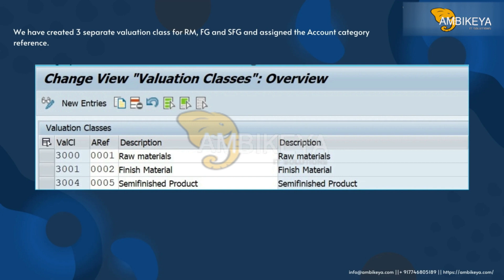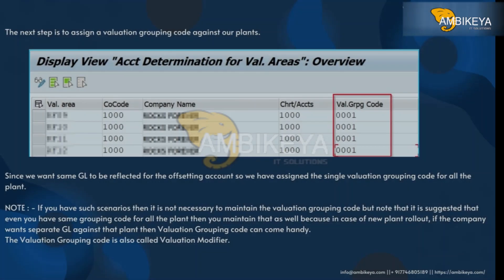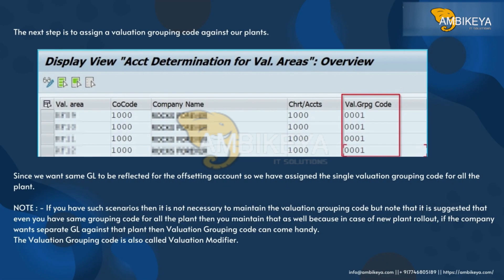We assigned the account category reference to the valuation classes. The next step is to assign a valuation grouping code against our plants. Since we want the same GL to be reflected for the offsetting account, we have assigned a single valuation grouping code for all plants.